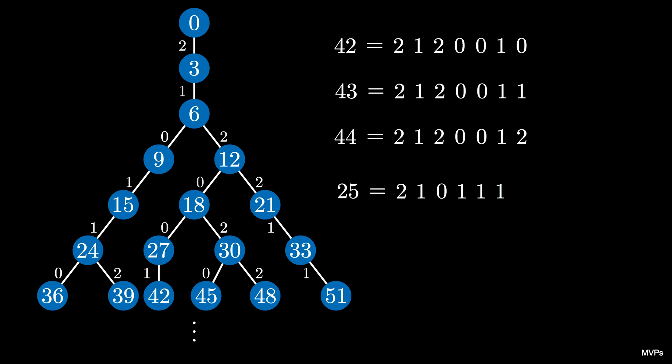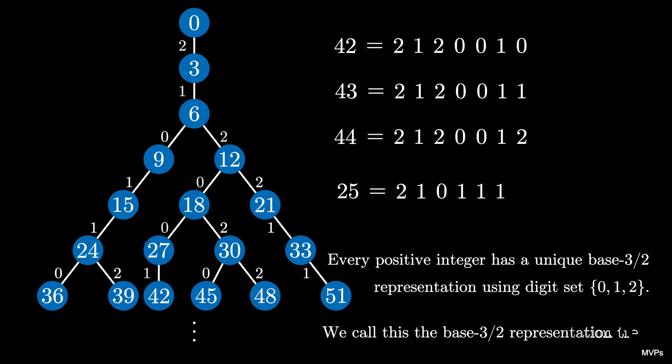It turns out that every positive integer has a unique base 3 halves representation using the digit set 0, 1, and 2, and the tree method that we just described here will produce that unique representation for you. Because of this property, we call this tree the base 3 halves representation tree. Do you think there are similar tree structures for different rational base representations?